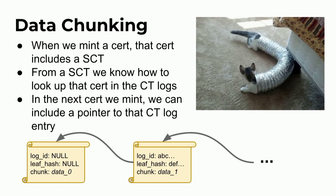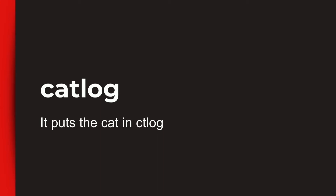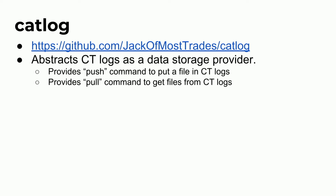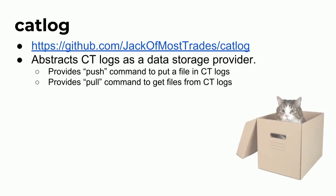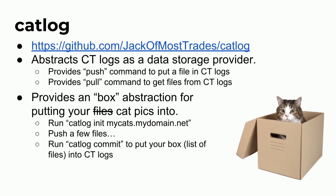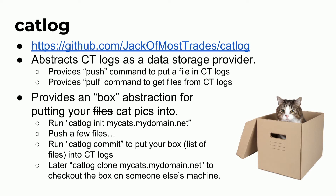That's more complicated than simple command-line tricks — you really need a tool to intelligently pull down the chain of certificates. So I created a tool called CATlog, for putting cat into CT log. It's an open source tool written in Python. It abstracts the CT logs as a data storage provider, modeled on Git. It has a push command that lets you push something up there permanently, and a pull command to retrieve files later. You can put all your files — or all your cat pictures — into a box. You run cat log init with a domain name, push files, run cat log commit to put that collection into CT logs, and later anyone can run cat log clone to get all those files back.